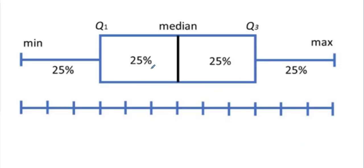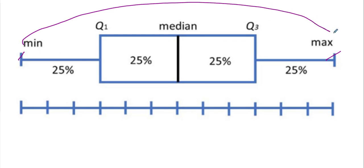This graphic represents the quartiles. From the minimum to Q1 is the first 25% of data; Q1 to the median is the next 25%; then the next 25% and the final 25%. From minimum to maximum is 100%. The interquartile range — from Q1 to Q3 — is where the middle 50% of your data occurs. That is important to remember; you may see questions centered around that.